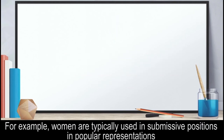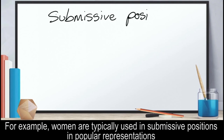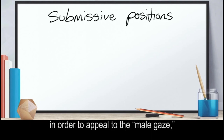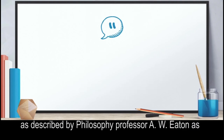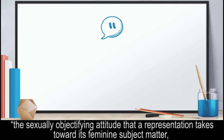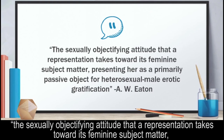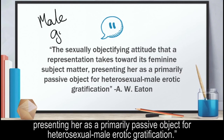For example, women are typically used in submissive positions in popular representations in order to appeal to the male gaze, as described by philosophy professor A.W. Eaton as the sexually objectifying attitude that a representation takes towards its feminine subject matter, presenting her as a primarily passive object for heterosexual male erotic gratification.